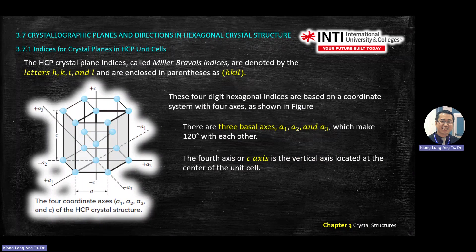For HCP, you have three parameters at the base: A1, A2, and A3. A1 is this line from the center molecule at the base. Going outside the paper or screen will be positive; going inside will be negative for A1. Moving to the right will be positive for A2; moving to the left will be negative for A2. Going into the screen will be positive, going outside will be negative. Each axis will have 120 degrees with each other — A1 with A3 and A2 will be 120 degrees.